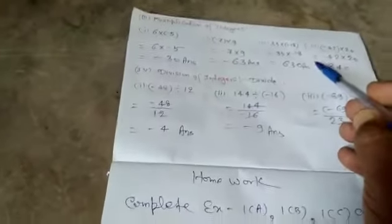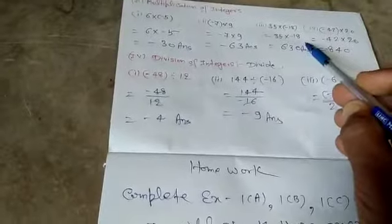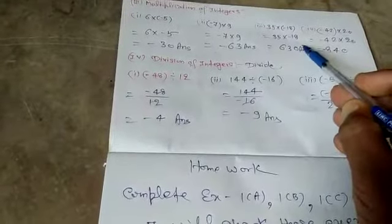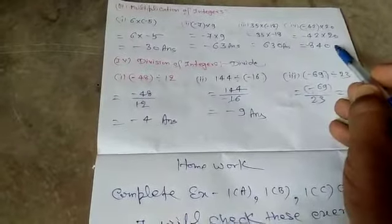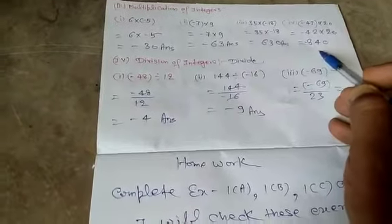Fourth. Minus 42 multiplied 20. That is equal to minus 840.